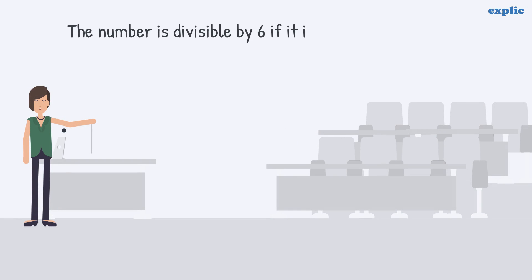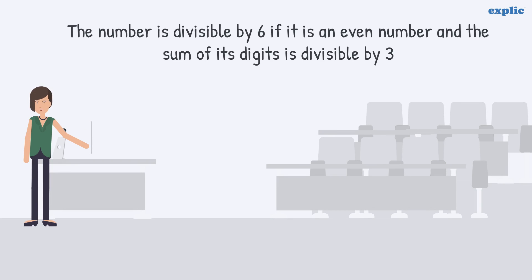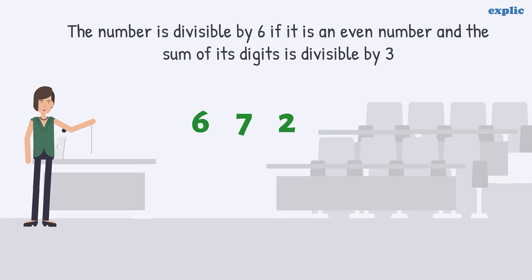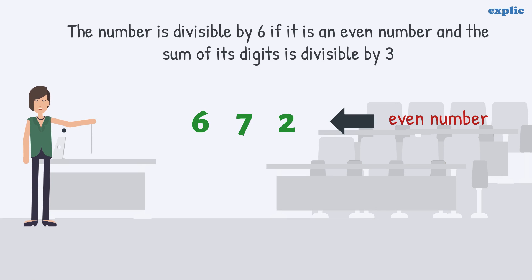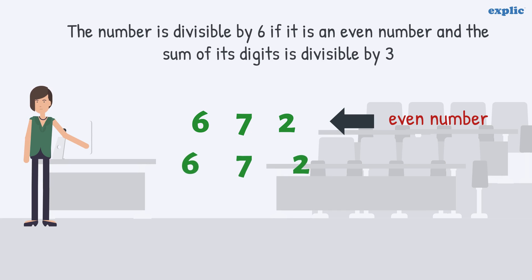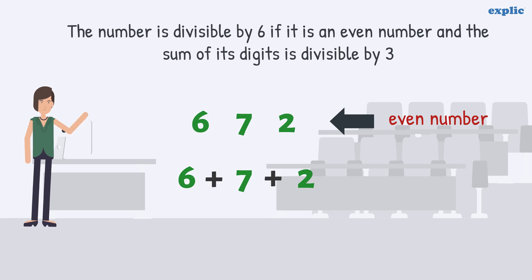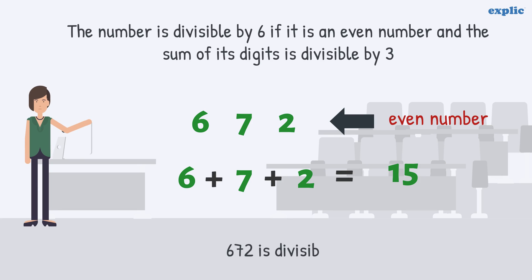A number is divisible by 6 if it is an even number and the sum of its digits is divisible by 3. For example, 672 is an even number and the sum of its digits, which is 15, is divisible by 3. Hence, 672 is divisible by 6.